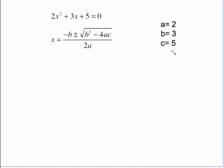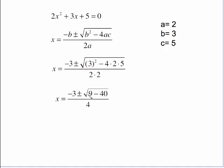Plug these numbers in a, b, and c. You will have this as your first step. Clean up the inside there. Negative 3 plus or minus 3 squared is 9. 4 times 2 times 5 is a negative 40 all over 4.